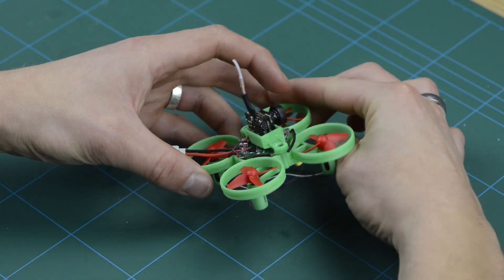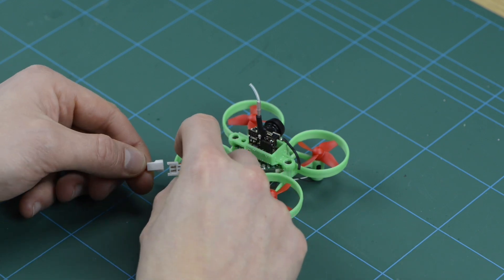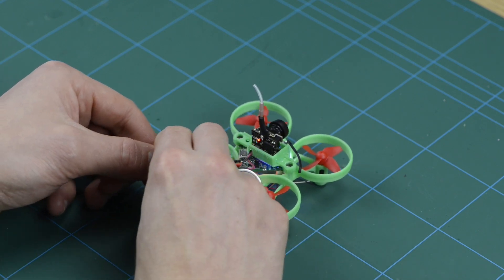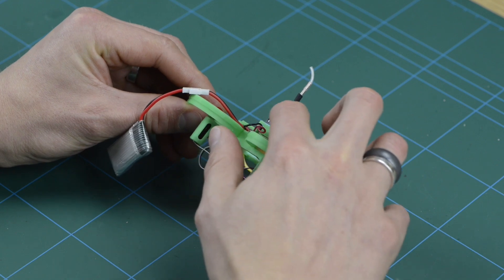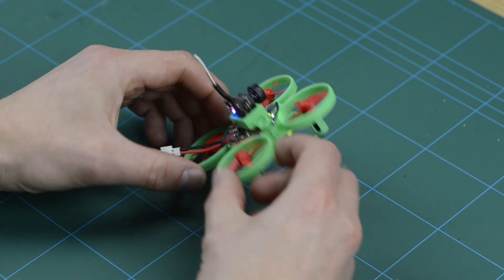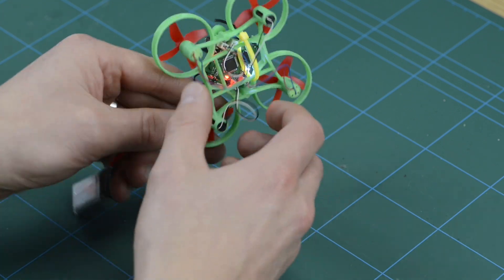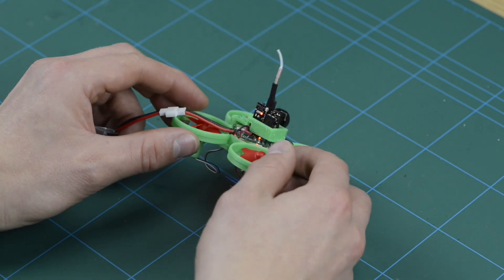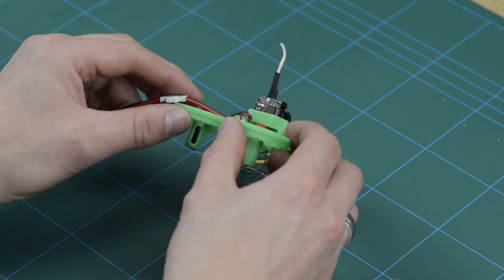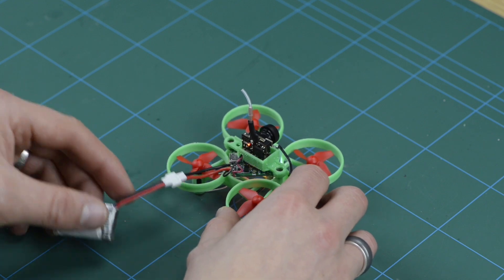And then we can quickly test to make sure that everything powers up correctly. So if we connect the battery, you should have some lights come on the back of the camera. And also, you'll see some lights on the bottom of the flight controller as well. And the power LEDs for the top of the flight controller. It's underneath my camera mount, but there'll be LEDs on there as well. So just make sure those all come on.